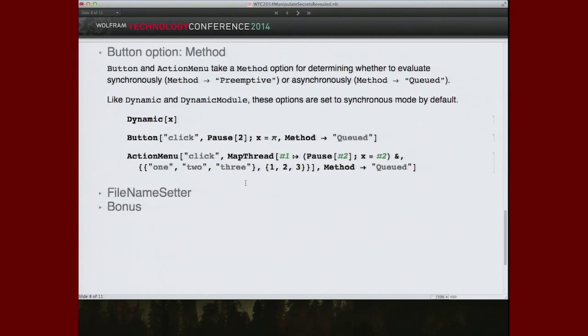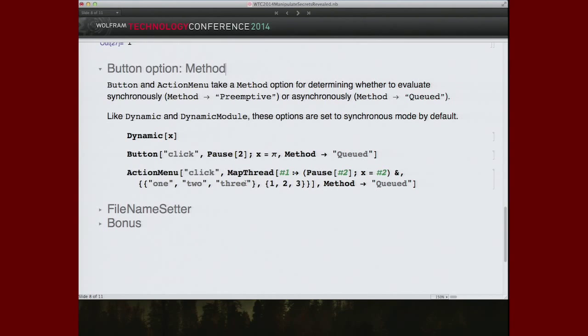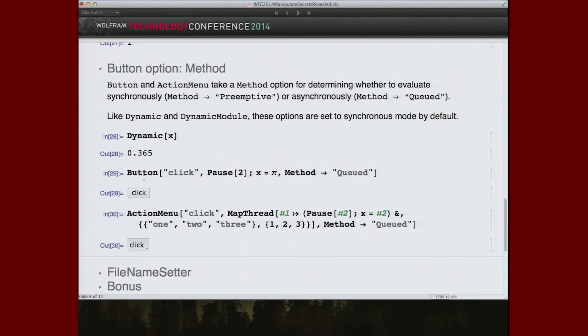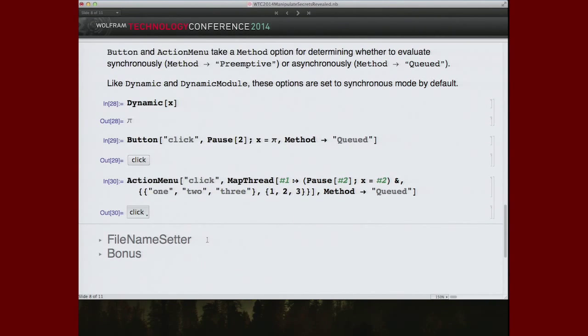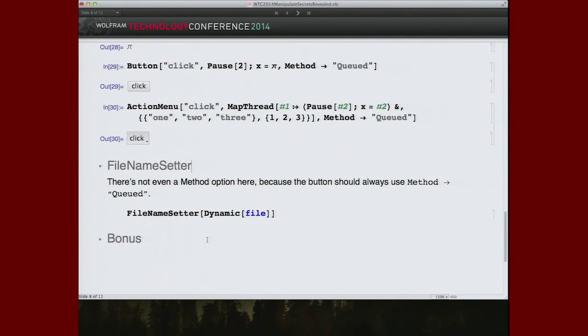A few other controls are aware of the two different evaluation modes. Button and action menu have a method option, which lets you specify queued evaluations versus preemptive evaluations. And by default, they are preemptive. But if you have long running evaluations, say you have a button that goes off and hits the network and you don't know what your network latency is going to be, or you have something that opens a dialog box and asks the user for something, you should always use method queued in that case. And action menu and button are the two that can do that. And file name setter, there's not even a choice for method because it always opens a dialog, so it always has method queued burned in.